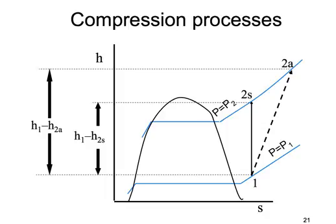First let's look at a compression process. Here we have an enthalpy-entropy diagram, an HS diagram. On this diagram we show the saturation dome and the saturation lines. On the left-hand side you have the saturated liquid, right-hand side saturated vapor, and the top of the dome is the critical point. The two blue curves are isobaric lines. On this diagram we show a compression process that goes from one to two vertically. This process is an isentropic process because on an HS diagram a vertical line represents an isentropic process.